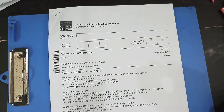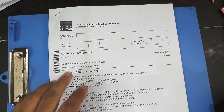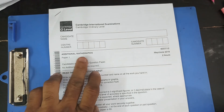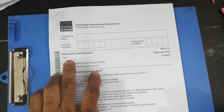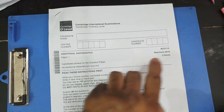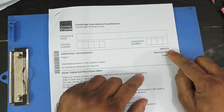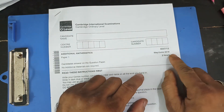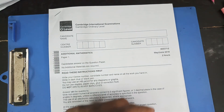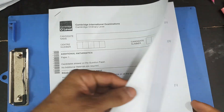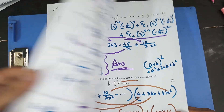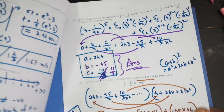Good morning, students. Welcome to the second video of solving Additional Mathematics Paper 1, 4037, variation 12, May/June 2018. In my last video, I have done up to question number 5. Today, I'm going to do from question number 6.